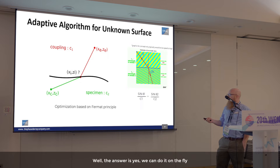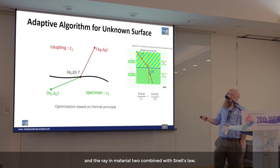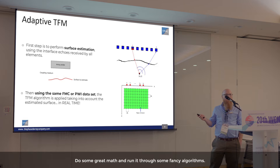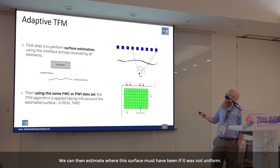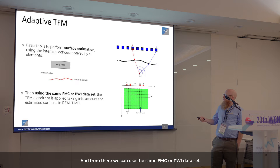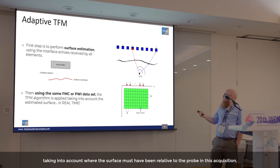Can we do it on the fly? The answer is yes. If we use the Fermat principle to optimize the minimum time path for the ray in material one and the ray in material two, combined with Snell's law, and run it through some algorithms, we can estimate where this surface must have been if it was not uniform. From there, we can use the same FMC or PWI dataset and calculate the delay-and-sum at each grid point, taking into account where the surface was relative to the probe during acquisition.